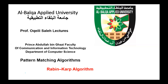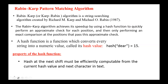Welcome again. Today we move to the next pattern matching algorithm: the Rabin-Karp algorithm. Rabin-Karp, or Karp-Rabin algorithm, is a string searching algorithm created by Richard Karp and Michael Rabin in 1987. The Rabin-Karp algorithm achieves a speedup by using a hash to quickly perform an approximate check for each position, and then only performing an exact comparison at the positions that pass this approximate check.